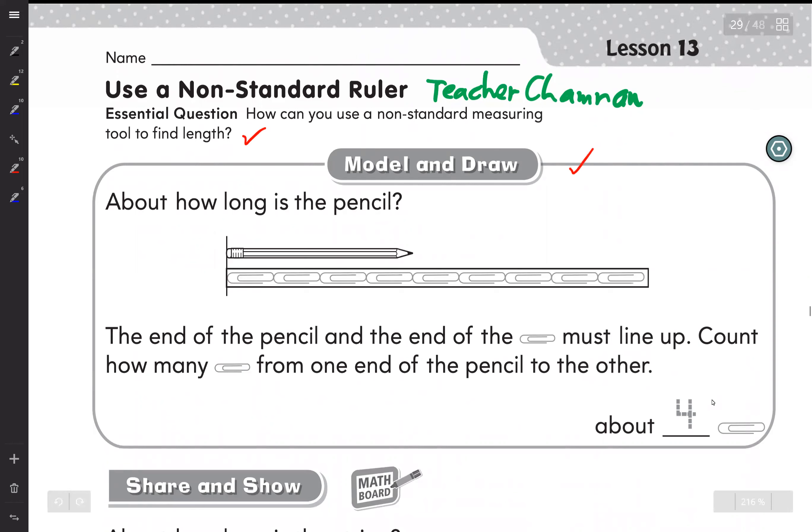Model and draw: About how long is the pencil? The end of the pencil and the end of the clip must line up. Count how many clips from one end of the pencil to the other. It's about four clips.